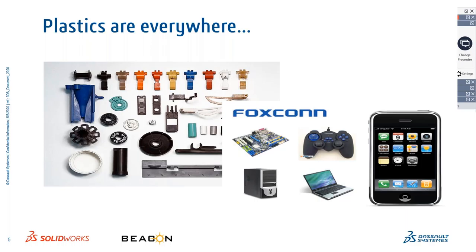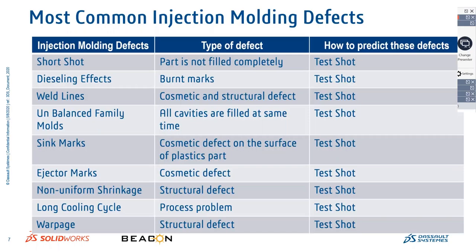Plastics are everywhere — from the carrying bag to the toothbrush you start your day with, to everything in your office, your car, your partner's mobile phone, and computers. Plastics are everywhere. Plastics manufacturing is not as straightforward as metal manufacturing; it needs different tooling and different materials. There are thousands of materials available with thousands of combinations and alloys of plastics, which makes this industry very dynamic.